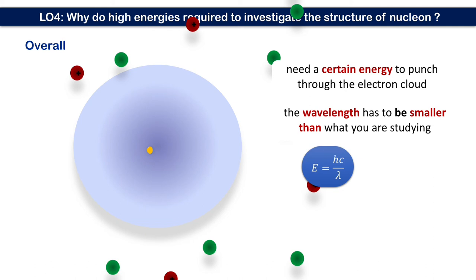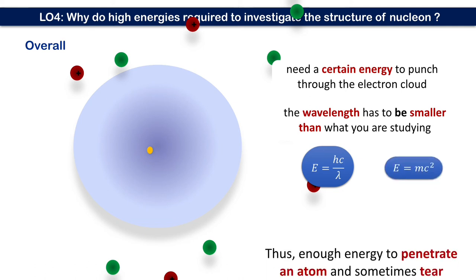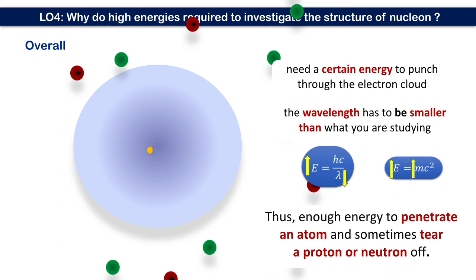Likewise with accelerators, increasing energy can be compared to making a shorter wavelength to study smaller things. An accelerator which operates at 4 billion electron volts has enough energy to penetrate atoms and sometimes tear off a proton and neutron. There are a few accelerators in the world that are much higher energy, but they have to operate at a much lower rate and with what could be described as a fuzzy picture.